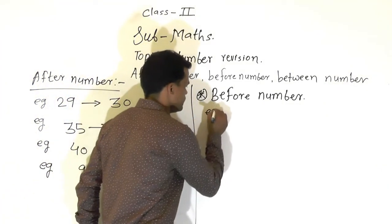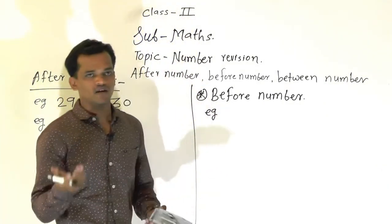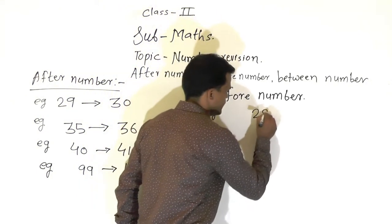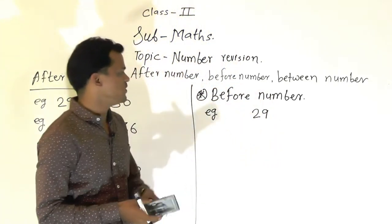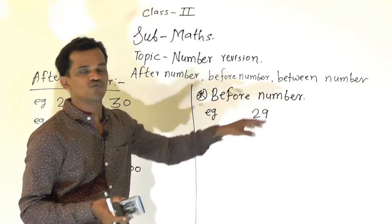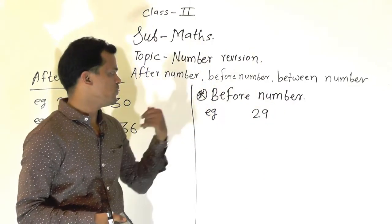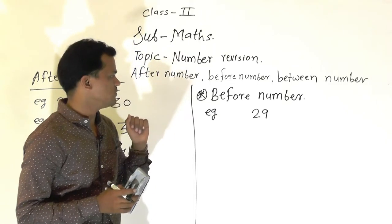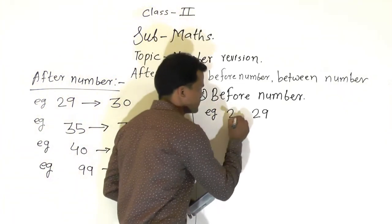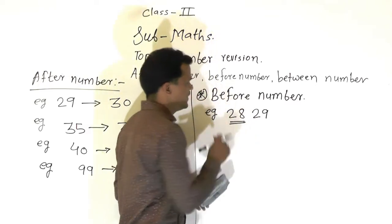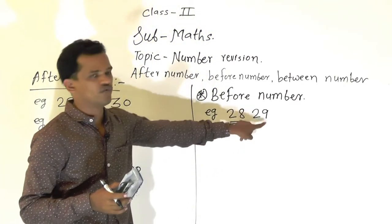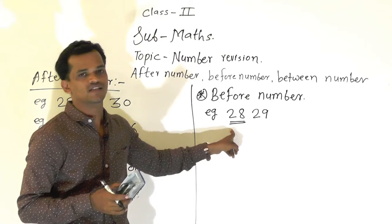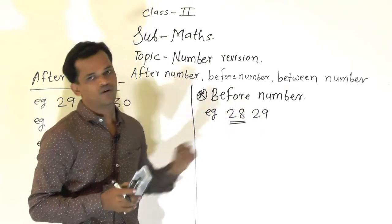Now we will see one example so you can understand. The given number is 29. Which is the before number of 29, meaning which number comes before 29 in the number series? That number is 28. So 28 is the before number of 29, or we can say 28 is the previous number of 29.